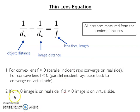For the image distance, a positive image distance means that the image forms on the real side of the lens. A negative image distance means that the image forms on the virtual side of the lens.